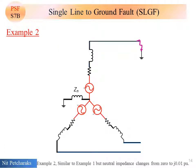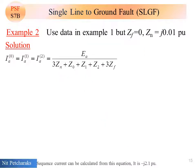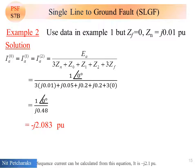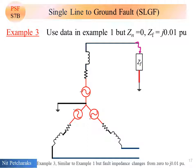Example 2, similar to example 1, but neutral impedance change from 0 to J 0.01 per unit. Sequence currents can be calculated from this equation. It is minus J 2.1 per unit. Then calculate voltage at phase A. It is still zero because fault impedance is zero.